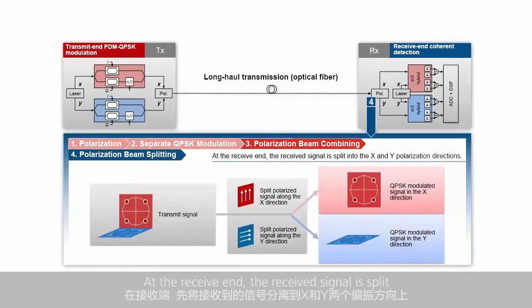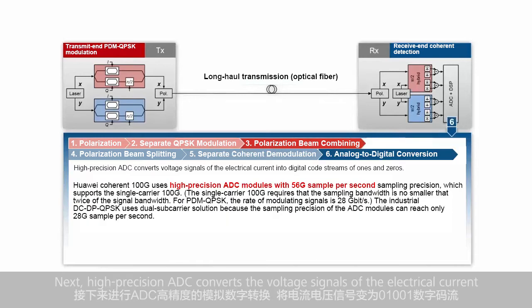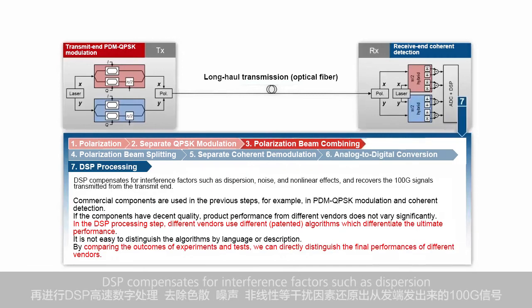At the receive end, the received signal is split into the X and Y polarization directions first, and then coherent detection converts the light signals in the X and Y polarization directions into electrical current — that is, voltage signals. Next, high-precision analog-to-digital conversion converts the voltage signals into digital code streams of 1s and 0s. DSP then compensates for interference factors such as dispersion, noise, and nonlinear effects, and recovers the 100G signals transmitted from the transmit end.